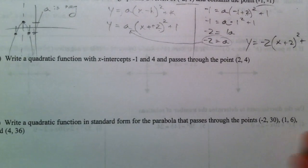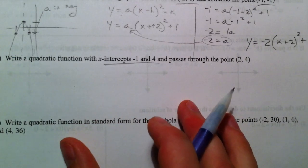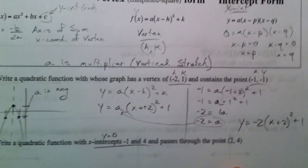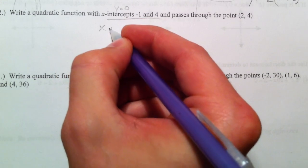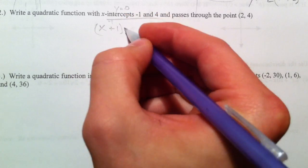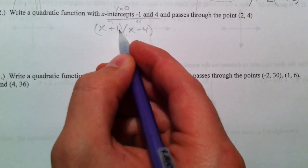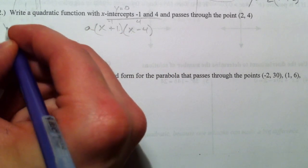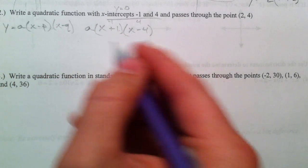Write a quadratic function with x-intercepts negative 1, 4. What that tells me is I'm going to know that y is 0. And so we're going to use intercept form for this one, it's much easier. So imagine having pulled this out. This would be x plus 1 and x minus 4, right? Because minus a negative 1 and x minus 4.